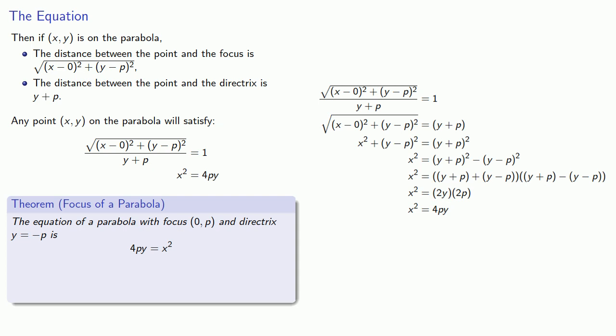And if our directrix happens to run vertically, we can do a very similar set of manipulations to find the equation of a parabola with focus (p, 0) and directrix x equals negative p, which is 4px equals y squared.